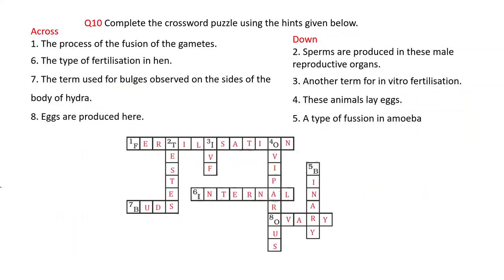Now complete the crossword puzzle using the hints given. Some letters are already provided. The process of fusion of gametes — first across — is known as fertilization. The type of fertilization in humans — sixth across — is internal, starting with 'I'.